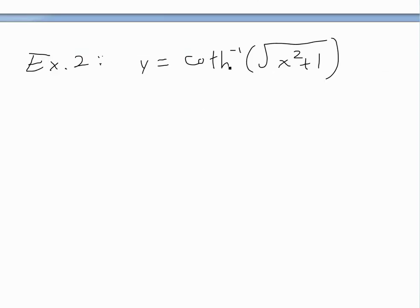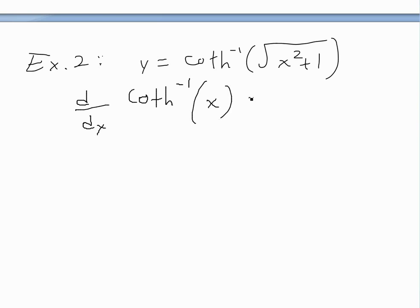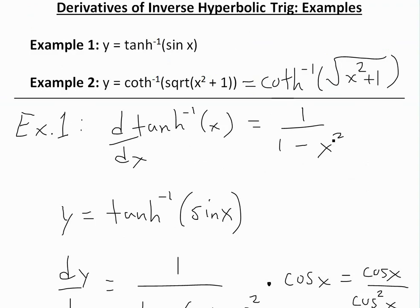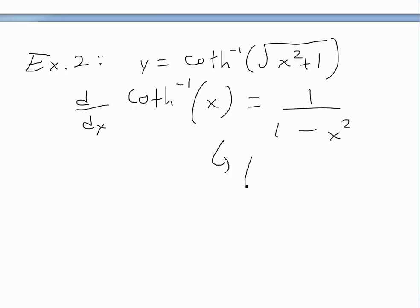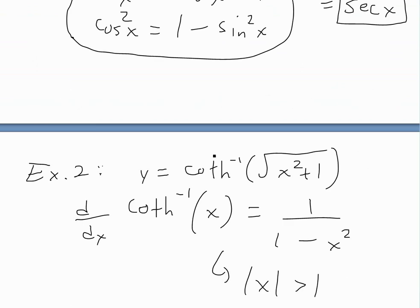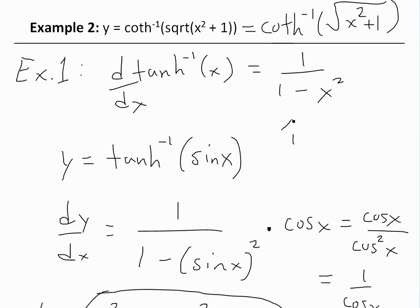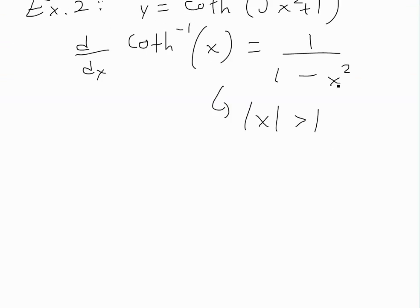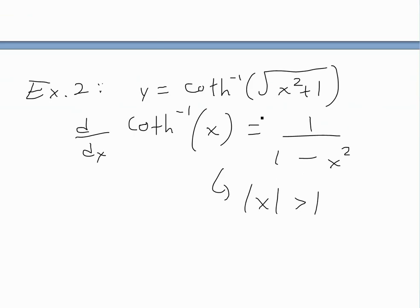For example 2, I want to first point out that the derivative of inverse hyperbolic cotangent of x is equal — as I showed in my earlier video — to the same thing as for inverse hyperbolic tangent, which is 1 over 1 minus x squared. Although the formulas are identical, the domains are different. For inverse hyperbolic cotangent, the domain is the absolute value of x greater than 1, while for inverse hyperbolic tangent the domain is absolute value of x less than 1. Same derivative, different domains.